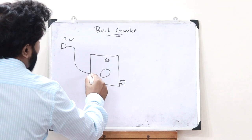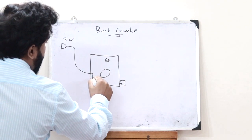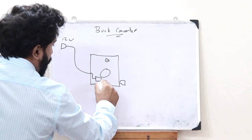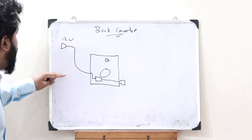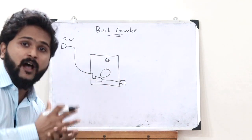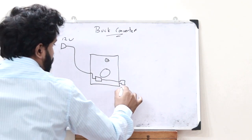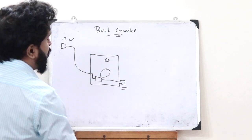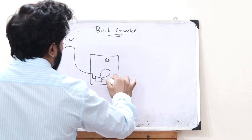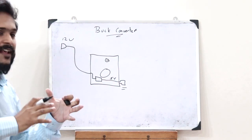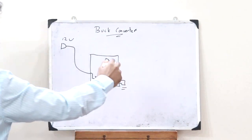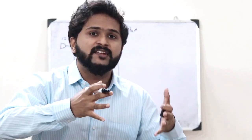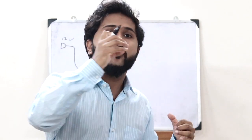Therefore, this 12-volt supply is connected to a buck converter — a step-down converter — and this step-down converter's output is connected to the USB source. So this particular voltage is stepped down to be provided to the USB. A USB generally operates at around 4 to 5 volts, so the buck converter provides this 5-volt source to the USB. This is the basic idea behind a buck converter: it is a step-down DC to DC converter that reduces the output voltage.